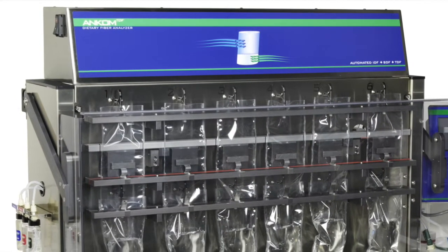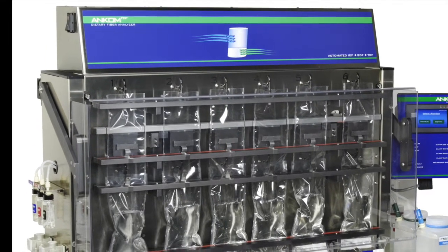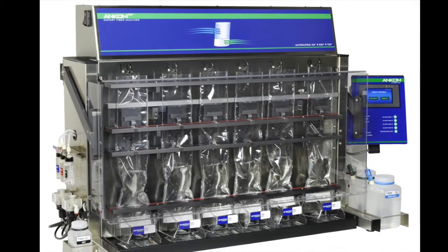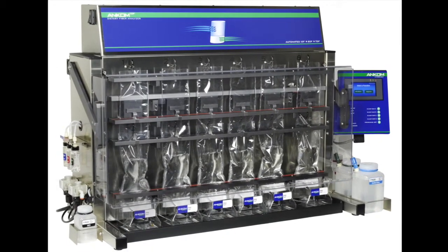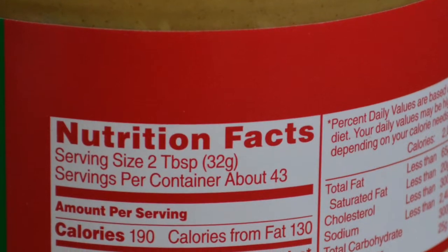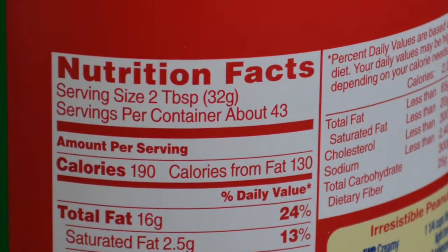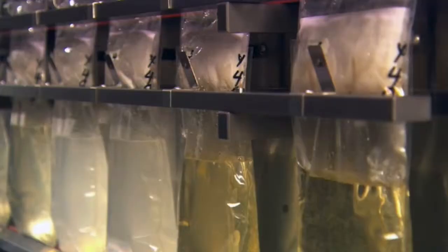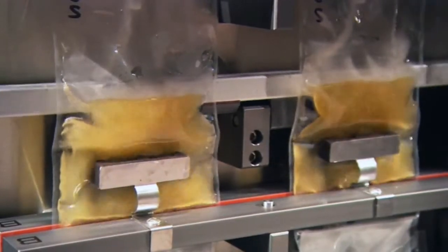According to AOAC method 985.29E, and also referred to in AOAC method 991.43, any sample with a fat content greater than 10% must have the fat removed before determining the amount of dietary fiber.